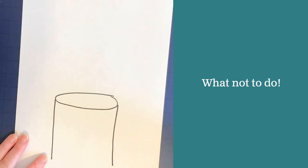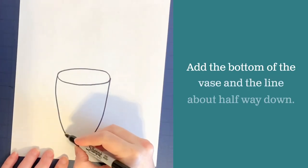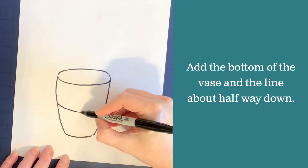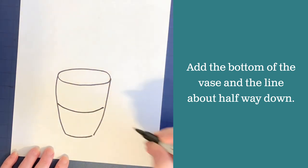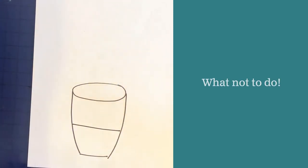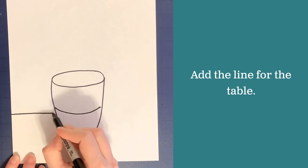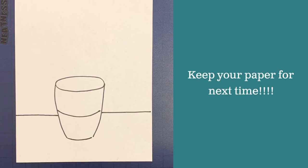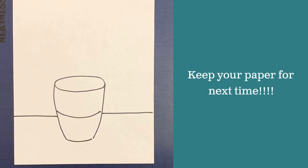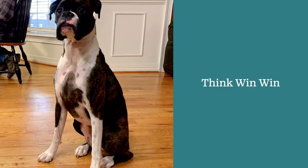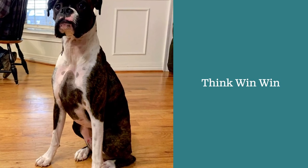Add the sides of the vase so as they come down they taper in — do not use just straight lines. Add a gentle curved line at the bottom of the vase. At the halfway point, do not add straight flat lines. Add a straight line to be the table that the vase sits on. Keep this paper for next week's lesson when we add the flowers inside of the vase. Ozzy says think win-win — he knows you can do this!